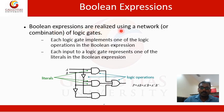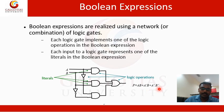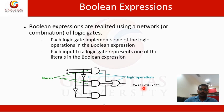Boolean expressions are realized using a network combination of logic gates. Here we can see three AND gates, two NOT gates, and one OR gate. Using this combination of logic gates we get the Boolean expression AB plus A dash B plus A dash B dash. Literals work as variables and serve as inputs for the different logic gates, while the logic gates represent the logical operations.